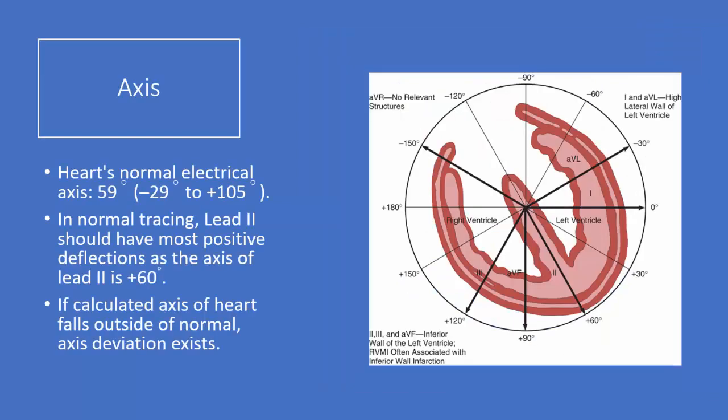The heart's normal electrical axis is 59 to 60 degrees depending on what textbook you read. In a normal tracing, lead two should have the most positive deflections as the axis of lead two is positive 60. If under normal circumstances the axis is going around that normal 59 to 60 degrees, lead two should be the most positive because that's the direction the bulk of electrical conduction is traveling.